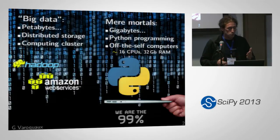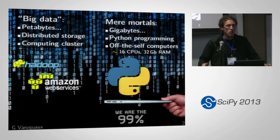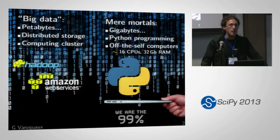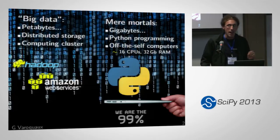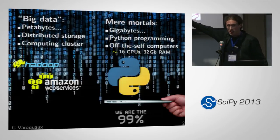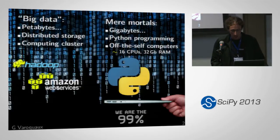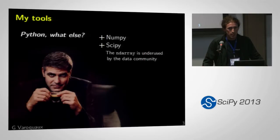On the high end I have 16 CPUs, because that's what I have, but colleagues have 32 or more. I work with people who actually want to process their data on this supercomputer — and I am not kidding, this is my day-to-day user. So what's my tool stack? Python, of course, and NumPy and SciPy.